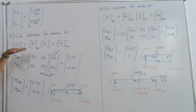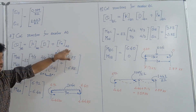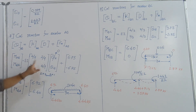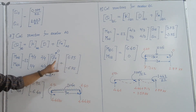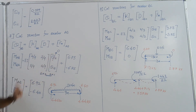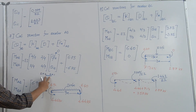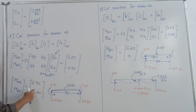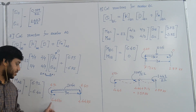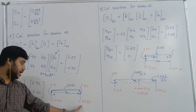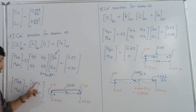The next step is to calculate reactions for member AB using the equilibrium equation: force matrix at AB = stiffness matrix of AB × displacement at AB + fixed end moment matrix of AB. With theta A = 0 (fixed end), the matrix multiplication gives MAB = 6.92 kNm and MBA = 6.40 kNm. Taking moments at A, the reaction at A is 4.46 kN and the reaction at B from member AB is 4.44 kN.